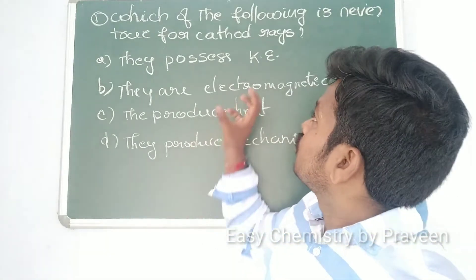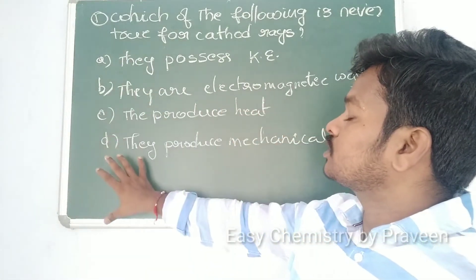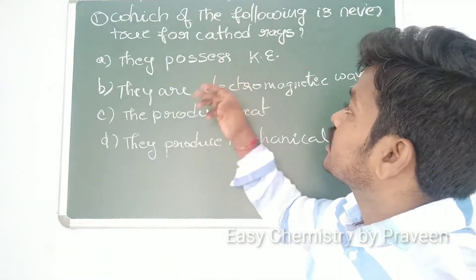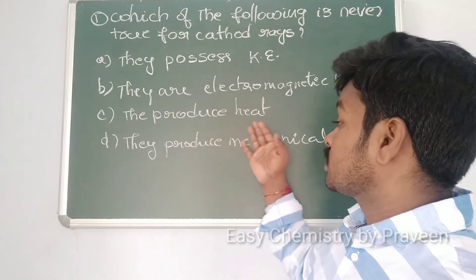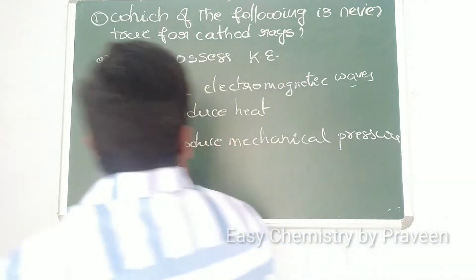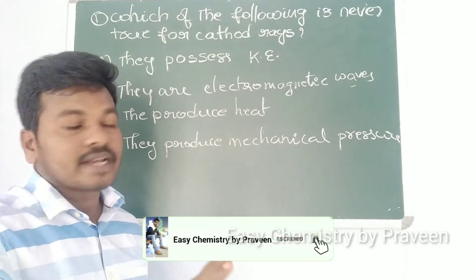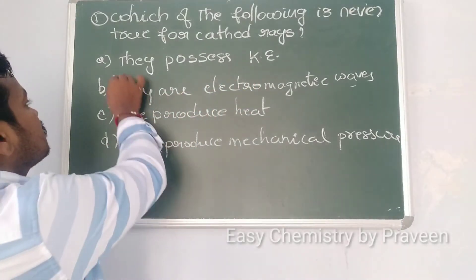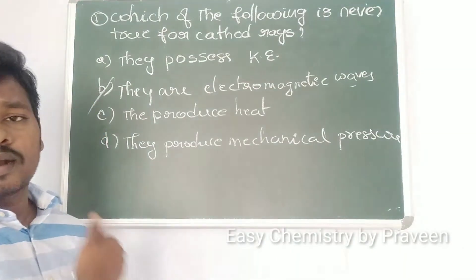The first question: which of the following is true for cathode rays? The options are: they possess kinetic energy; they are electromagnetic waves that produce heat; they produce mechanical pressure. Cathode rays are electrons — they are not electromagnetic waves. They do produce heat and mechanical pressure and they do possess kinetic energy. So option B is the incorrect answer.